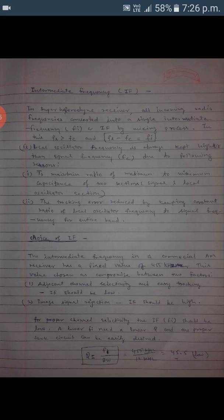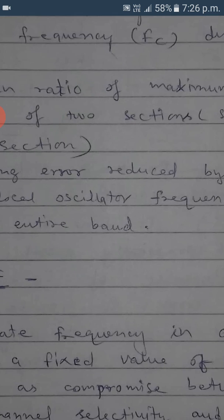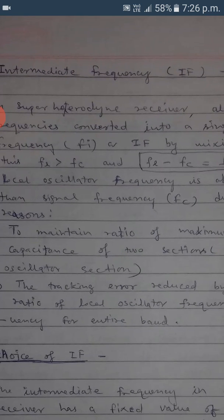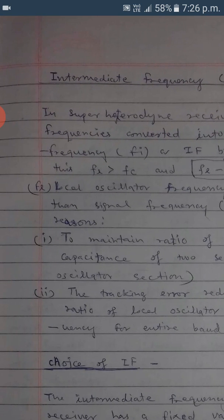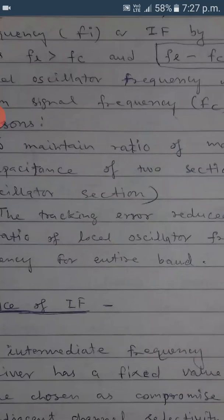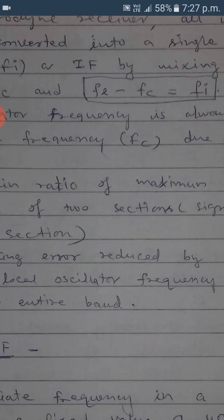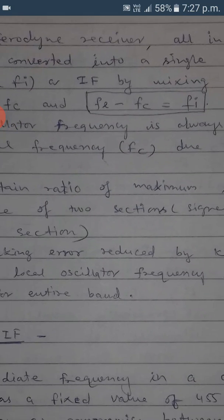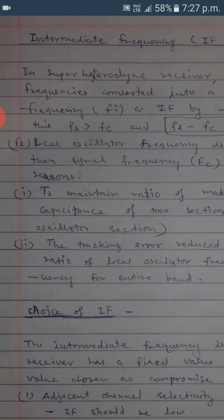Today we will cover the intermediate frequency, which is a very important parameter in the superheterodyne type of receiver. The superheterodyne receiver has a fixed intermediate frequency which is generated by the mixer — it is basically the difference of the local oscillator frequency and the signal frequency.